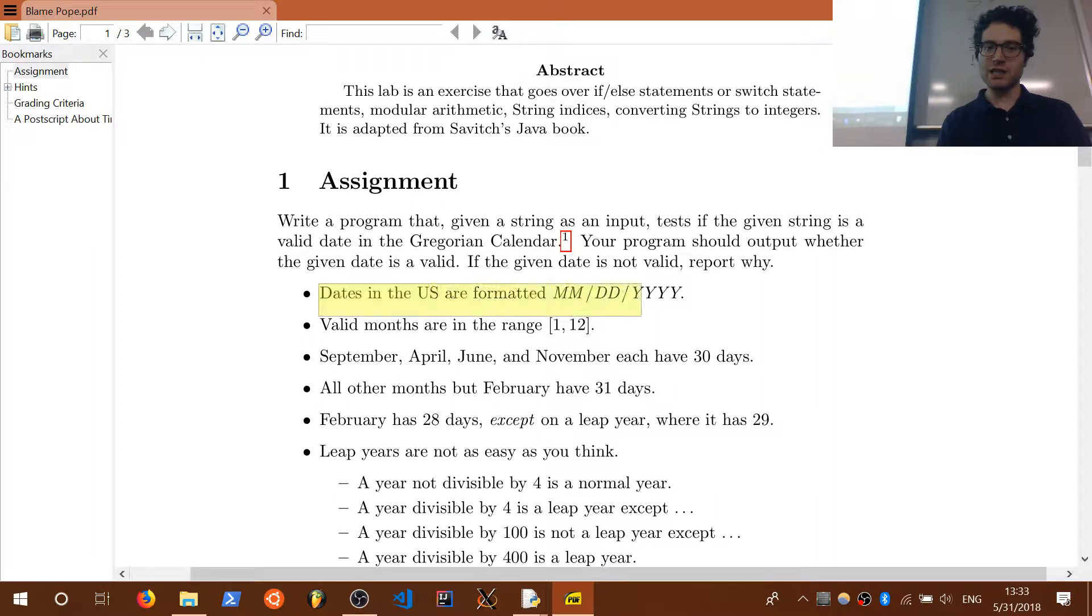Let's go over some more details. Dates are formatted in the U.S. format, which is month first, then day, then years, which has never really made sense to me why you do it in that order. Valid months are in the range of 1 to 12. If you remember from algebra, those brackets mean inclusive. So the rule is that September, April, June, and November, which are months 9, 4, 6, and 11, all have 30 days. All the other months but February have 31 days.